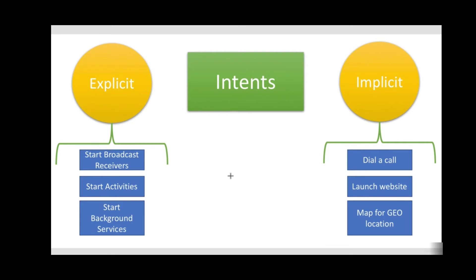An intent object is just a bundle of information. It contains information of interest to the component that receives the intent, such as the action to be taken and the data to act on, plus some information of interest to the Android system such as the category of the component that should handle the intent and the instructions on how to launch a target activity.